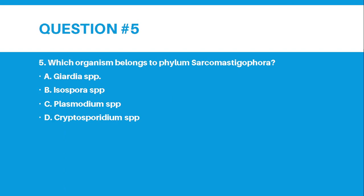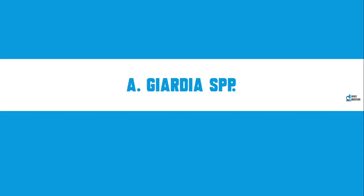Number 5. Which organism belongs to Phylum Sarcomastigophora? A, Giardia species; B, Isospora species; C, Plasmodium species; or D, Cryptosporidium species? And the answer for number 5 is letter A, Giardia species.